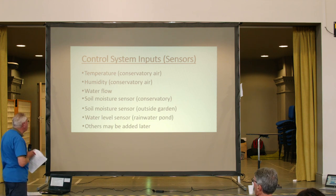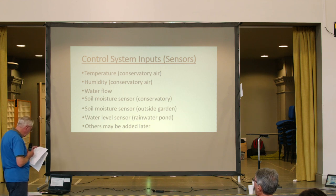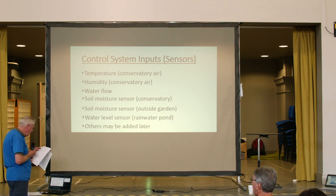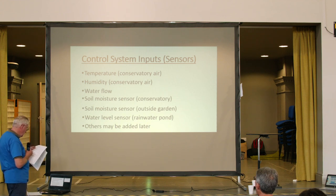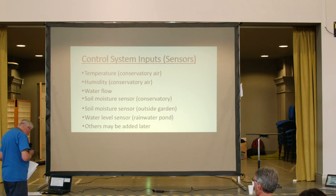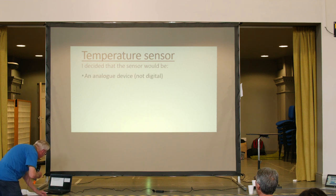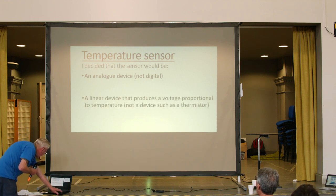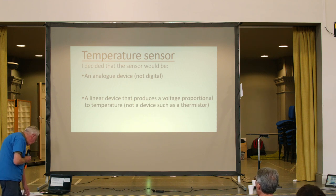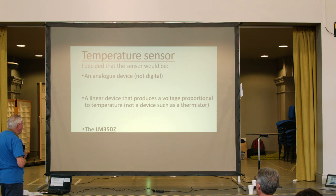I did a bit of internet research to decide what to use as a temperature sensor — plenty to look at. There's a very inexpensive digital device called a DHT11 which does both humidity and temperature, but I wasn't overly impressed with its accuracy. So I procured various devices and tested them. I came to a policy decision that it would be an analog device, not digital — a linear device that produces a voltage proportional to temperature, not a thermistor. And I found the LM35DZ, which I'm very pleased with.